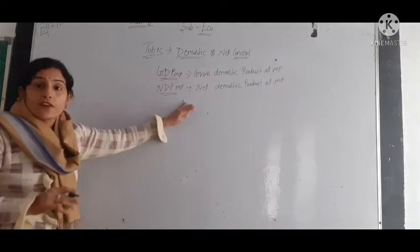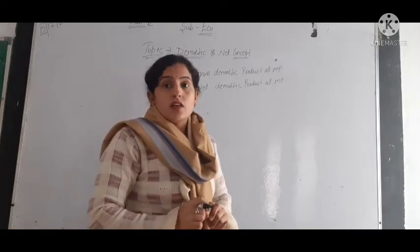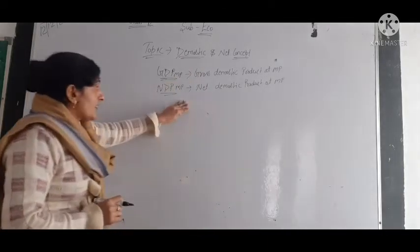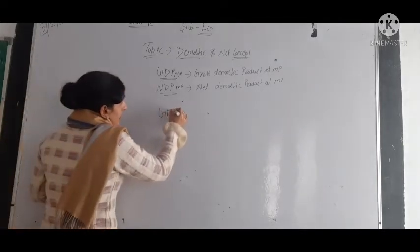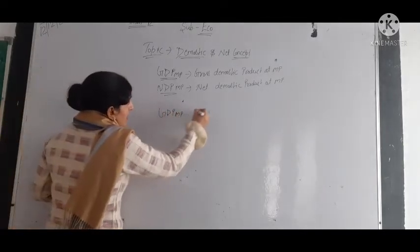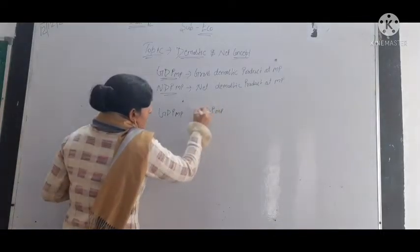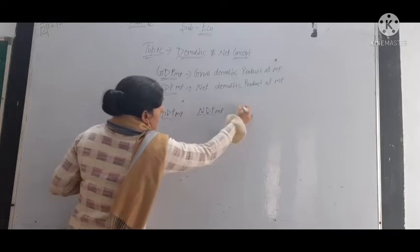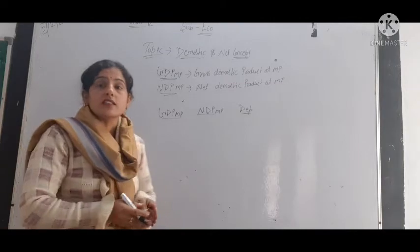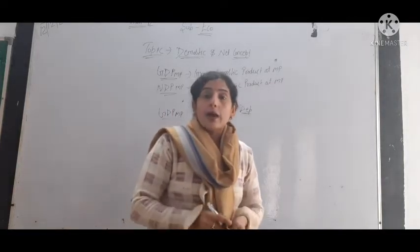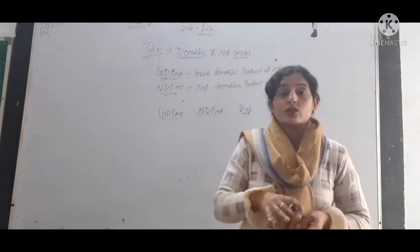So what is the difference between the domestic and net concept? The difference between GDP at market price and NDP at market price is depreciation. Depreciation, as discussed in the previous video, is the normal wear and tear from regular use of machinery.